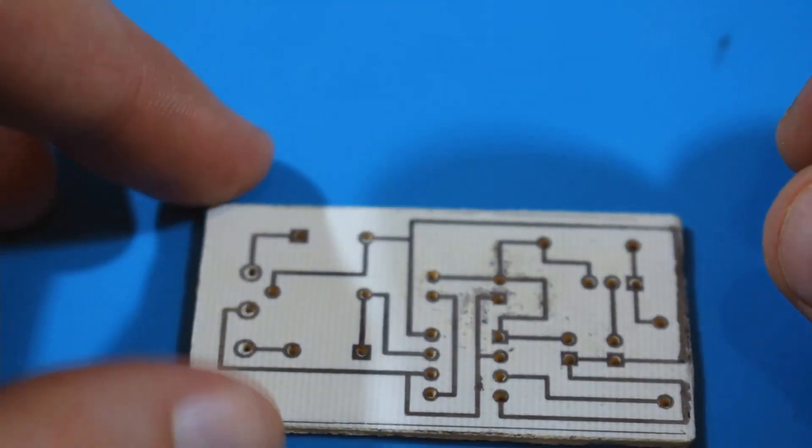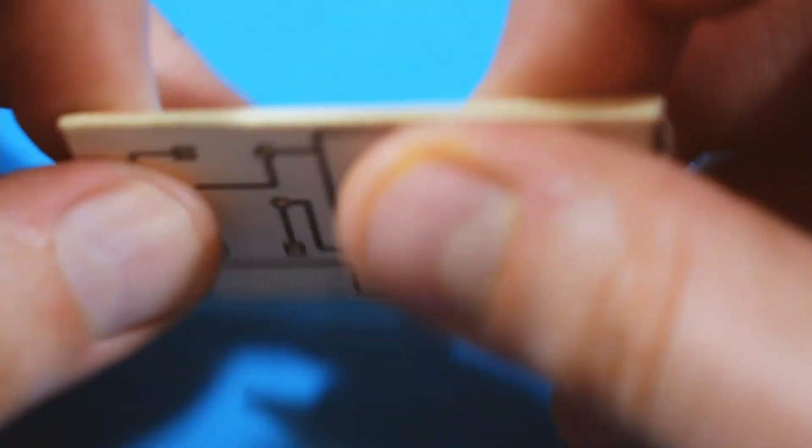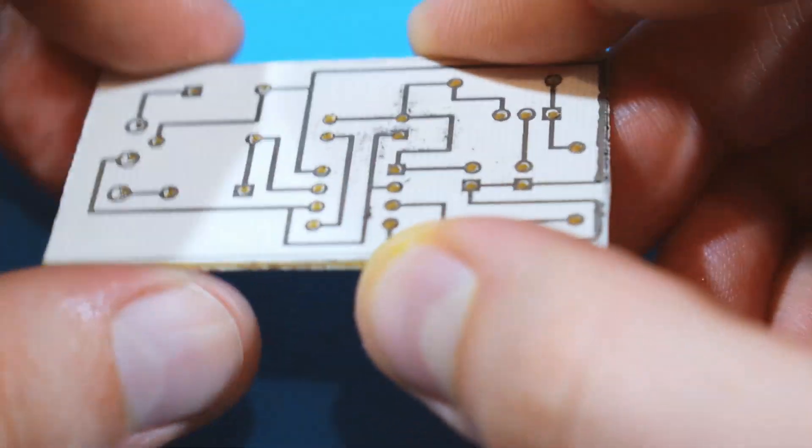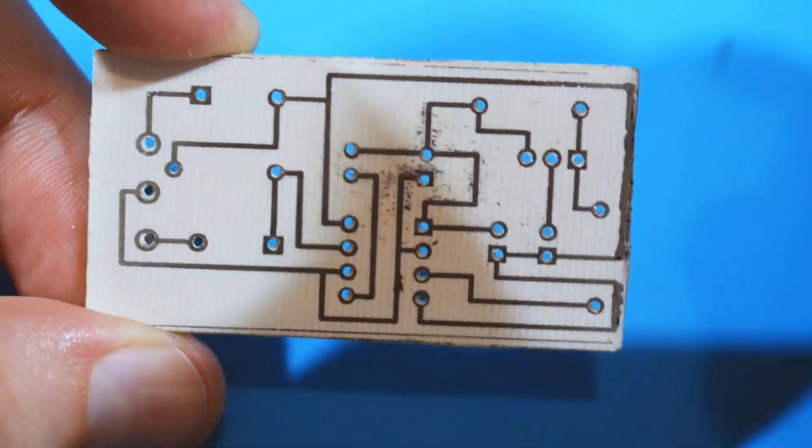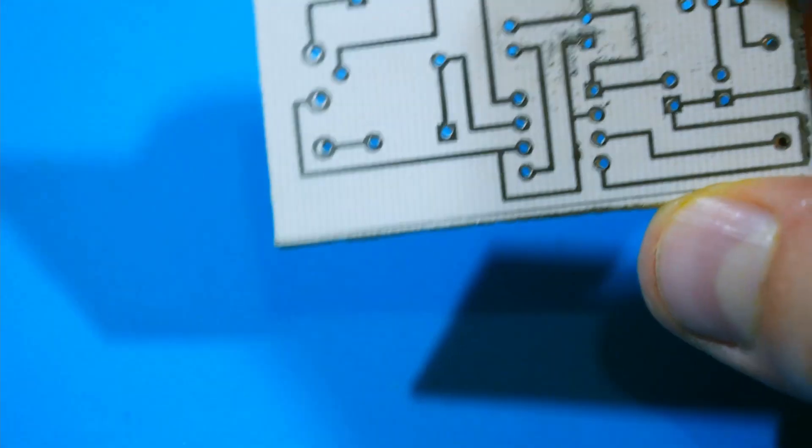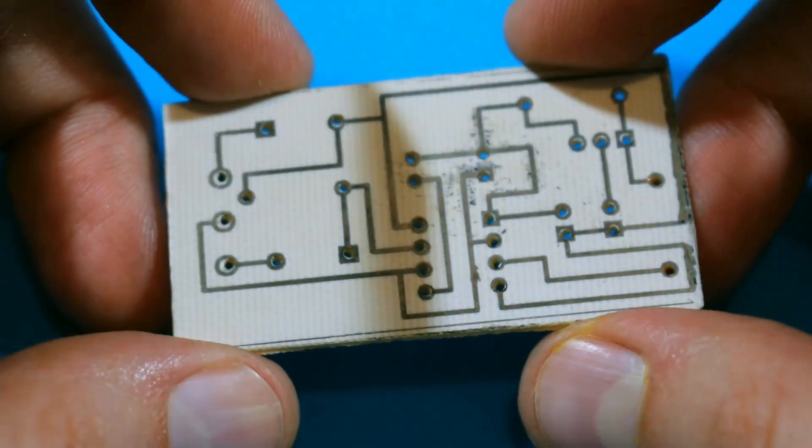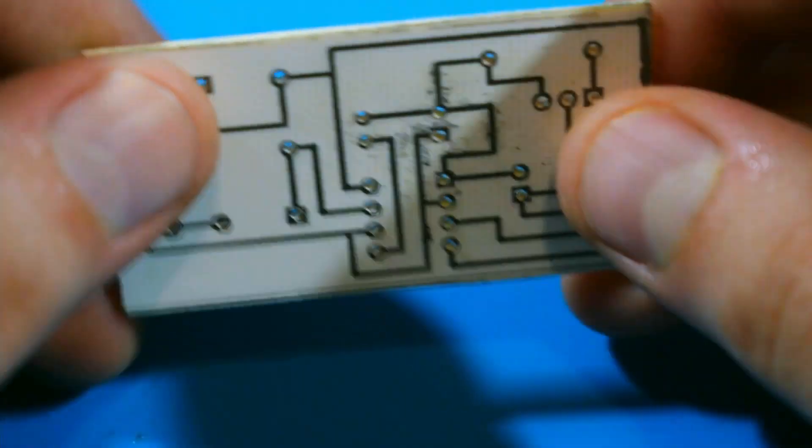I went for it. I just bought a copper cladded board, I believe that's how it's called, and I etched it, I tinted up and voila we have it.